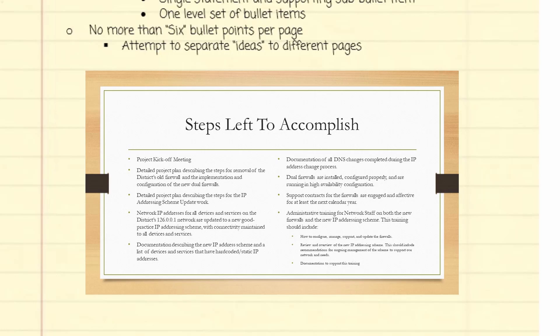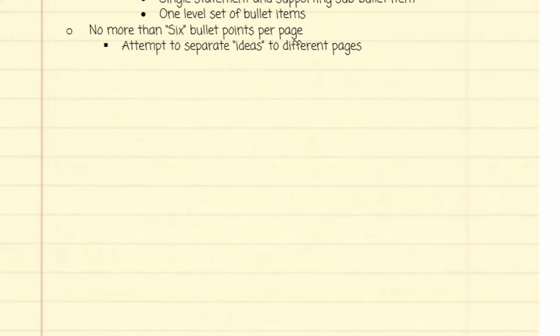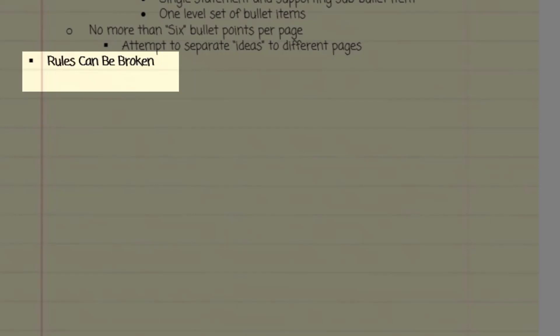As you can see, the rule of six or fewer bullet points can be broken. In fact, all the rules can be broken. Just know why you're deviating from the standards. Often it's to drive home a point.